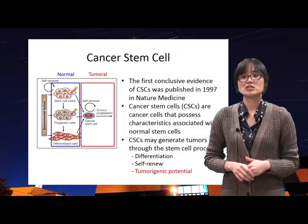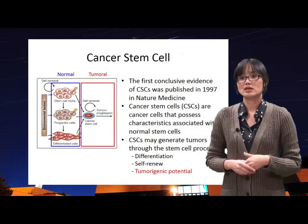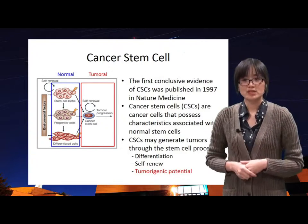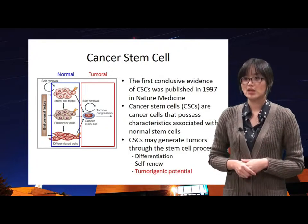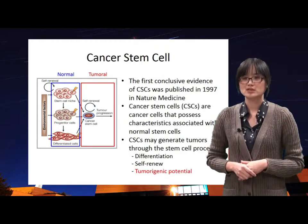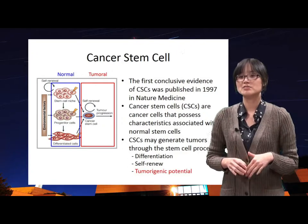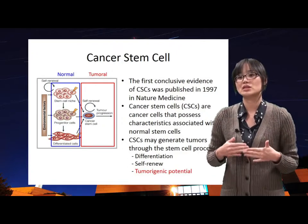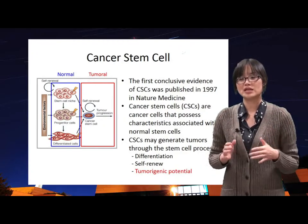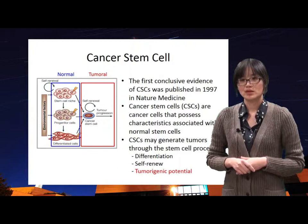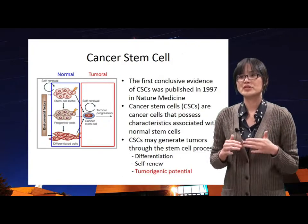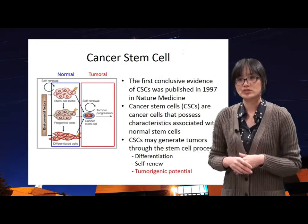What is a cancer stem cell? The cells which have properties of stem cells were isolated in cancer tissue. The cells can replicate themselves and differentiate into different cell types. Their characteristics are very similar to stem cells.